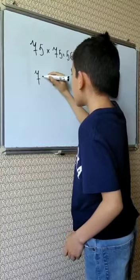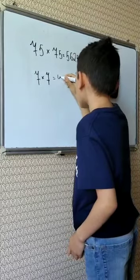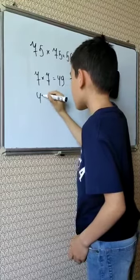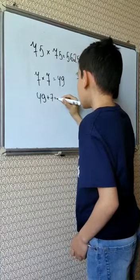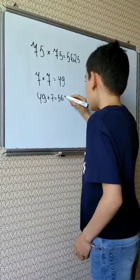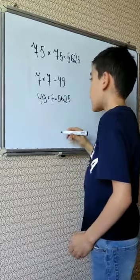7 multiplied by 7 is 49. And 49 plus 7 is 56. We need to link 25. So, we get 5625.